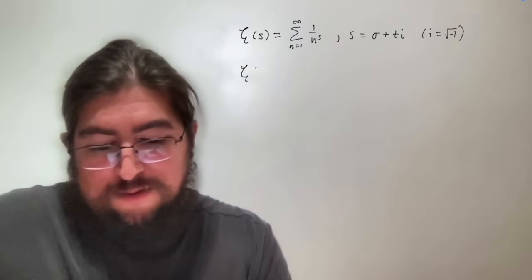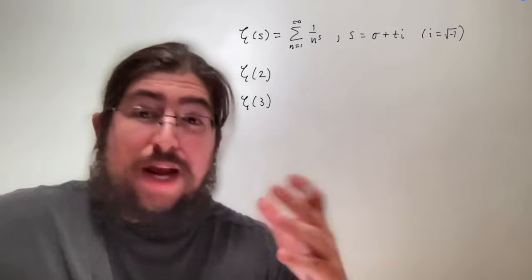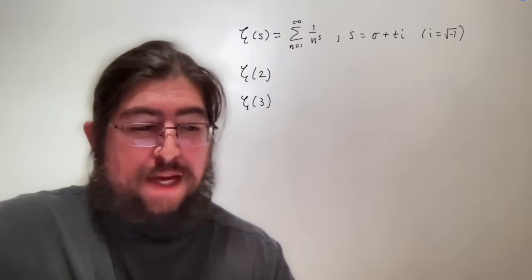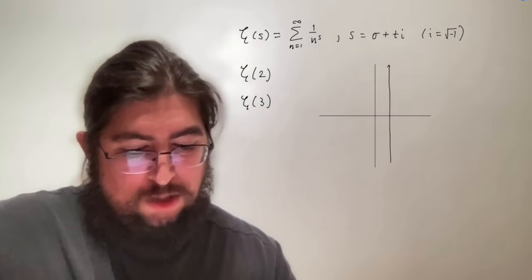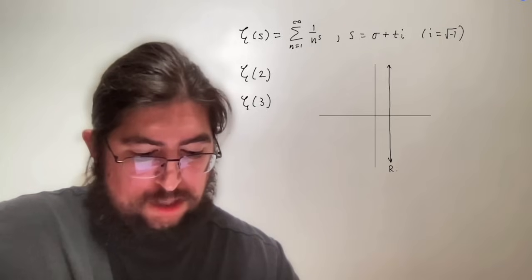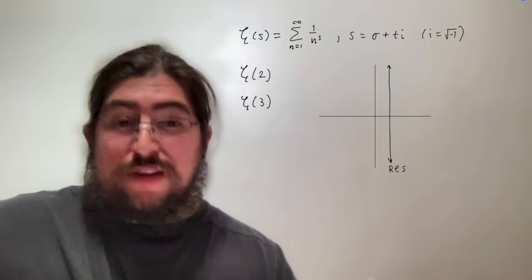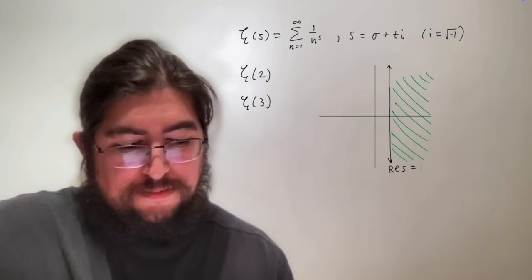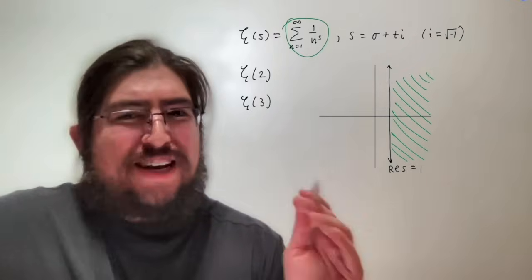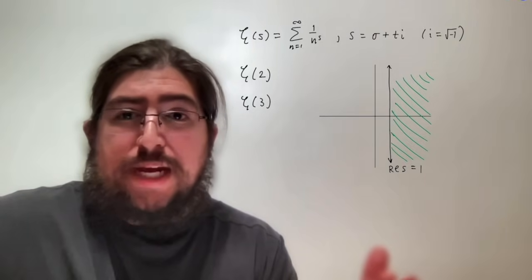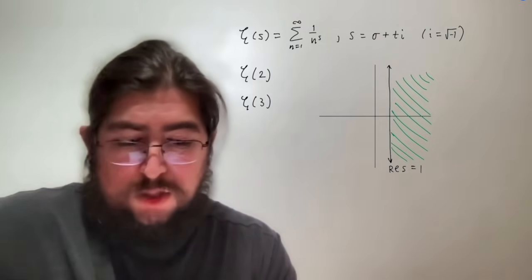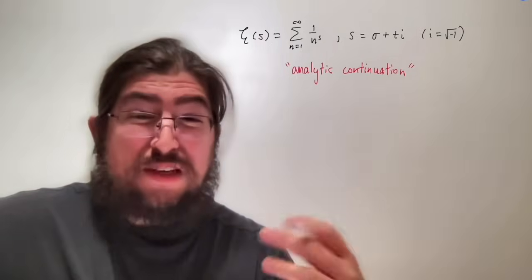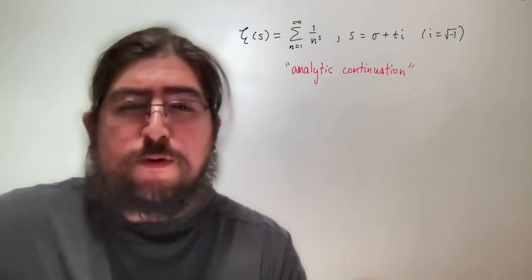This is great if you want to calculate values of zeta — for example, zeta of 2, zeta of 3, or any number bigger than 1, like 1.1 or 1 plus 3i — anything to the right of 1 on the complex plane. On the complex plane, the region where the real part of s is greater than 1 lies to the right of the vertical line Re(s) = 1. But that doesn't mean this is the only way to define zeta. There could be other ways of defining zeta that agree with this sum in that region — this is what's called an analytic continuation.